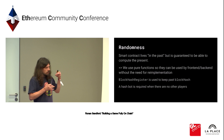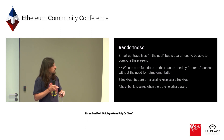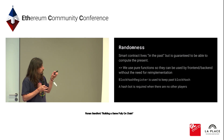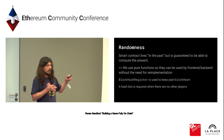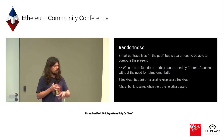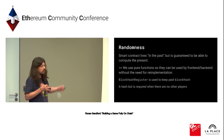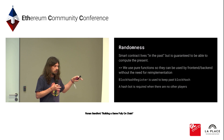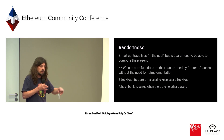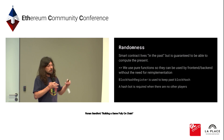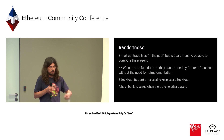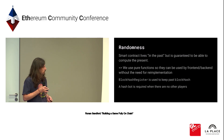In other words, the smart contract lives in the past but is guaranteed to be able to compute the present. We use pure functions on the smart contract side, so we can use the same exact function in a VM on the front-end and back-end without needing to reimplement the logic. Not all block hashes are saved, so we have a block hash register that stores the hash every time a player makes an action. There's also a bot that ensures the block hash is saved if no player comes for a certain amount of time.